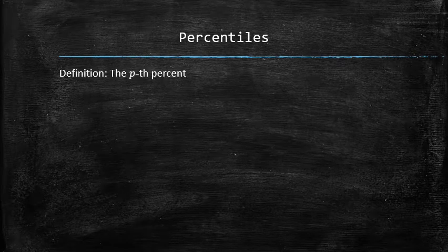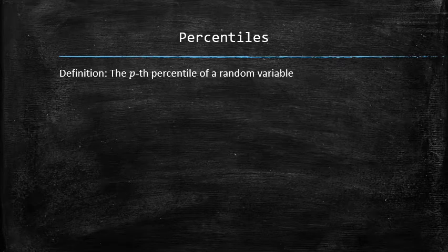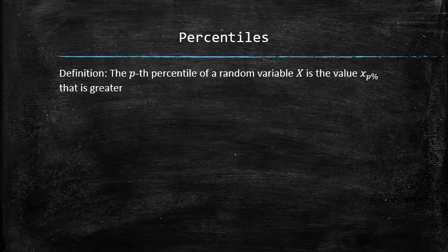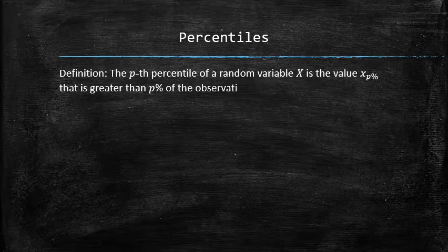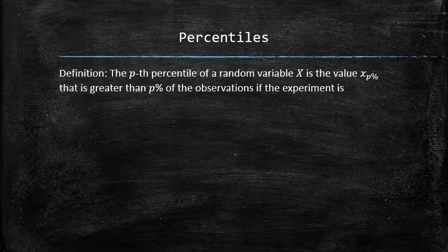By definition, the pth percentile of a continuous random variable x is the value that is greater than p% of the observations if the experiment is repeated many times.